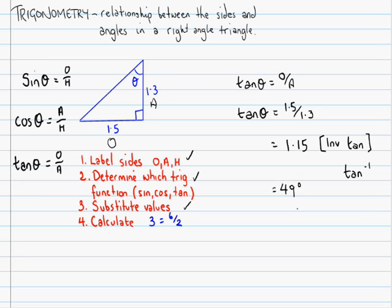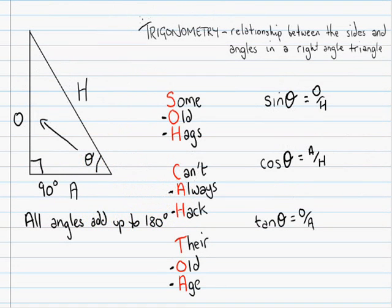49 degrees. Okay? Pretty easy. So, if you're able to label all the sides of a triangle, if you're able to actually use this, some old hags can't always hack their old age and apply this properly, you could do really well using trigonometry. In the next video, we're going to work out all the sides and angles of a triangle. Okay? See you then. Bye.